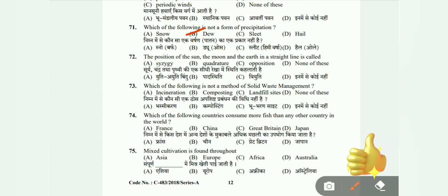Question 72: The position of the sun, moon, and earth in a straight line is called what — Syzygy, quadrature, opposition, or none of these? Question 73: Which of the following is not a method of solid waste management? Options: incineration, composting, landfilling sites, and none of these. The correct answer is D, none of these.